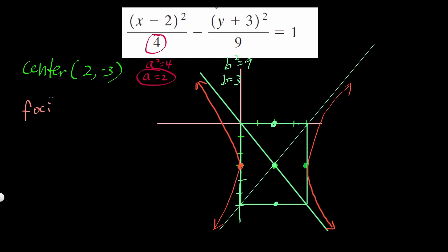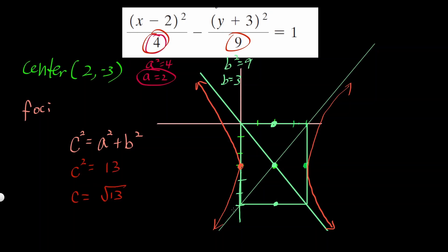Now let's find the foci — there are two, each inside the hyperbola. You have to find c, which is the length from the center to one of the foci. c squared equals a squared plus b squared — whatever the denominators are, just add them together. We have c squared equal to 13, so c is the square root of 13, which is approximately 3.6.